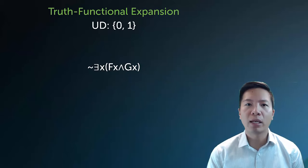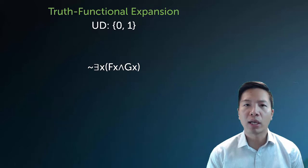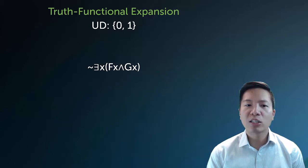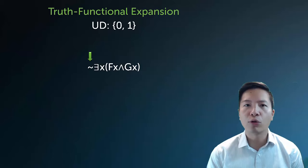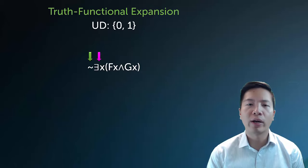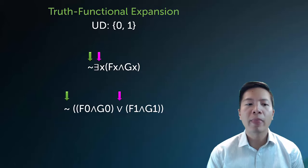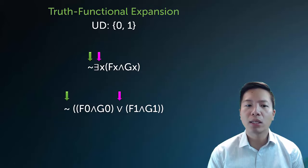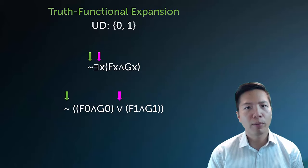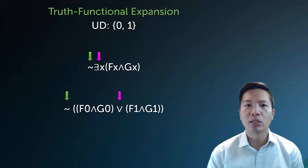Now truth functional expansions still have to preserve the main connectives. So here in this sentence I'm using an existential, but notice the main connective is still the negation. So when I expand it, I'm going to expand to each member of my universe of discourse one at a time and put disjunctions between them, but I still need to make sure that the negation is out front. So I look at the negation first, then I look at the quantifier, and then I can come up with something where the negation is out front modifying everything, and within the negation the main connective is the disjunction, which represents the existential quantifier. I expanded the sentence by doing a substitution to 0 first, then to 1.